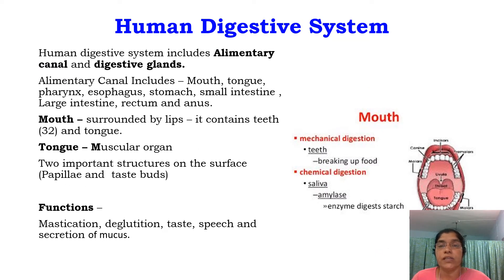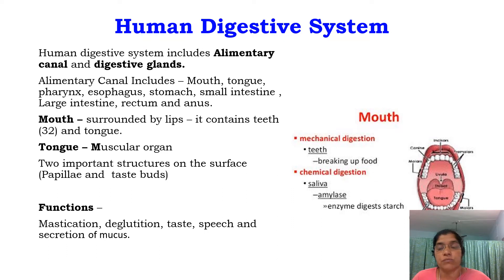The human digestive system includes the alimentary canal and the digestive glands. The alimentary canal includes the mouth, tongue, pharynx, esophagus, stomach, small intestine, large intestine, rectum and anus.